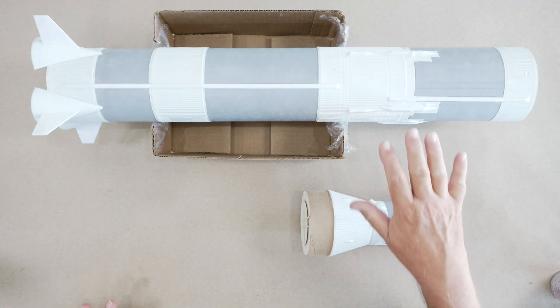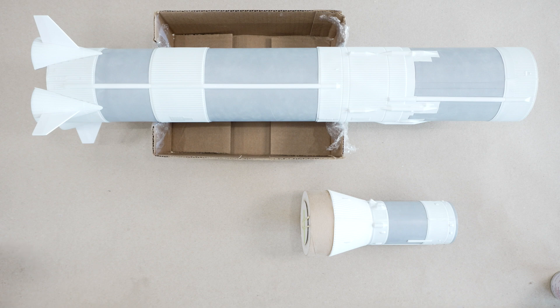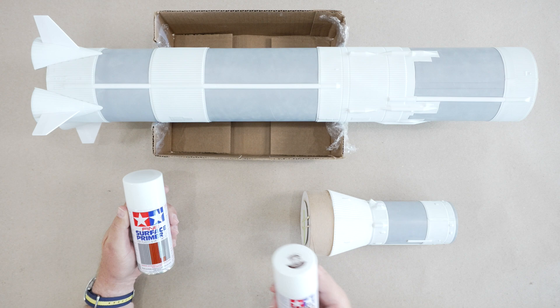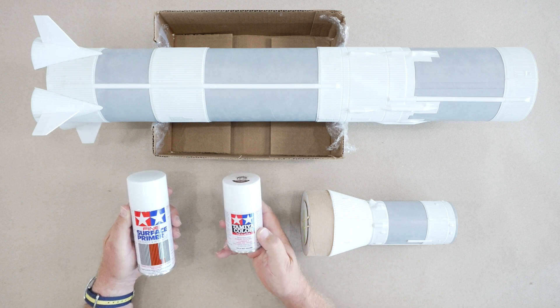Along with the upper and lower airframe assemblies we've already completed, we'll need plenty of Tamiya white primer and a whole bunch of pure white spray lacquer.